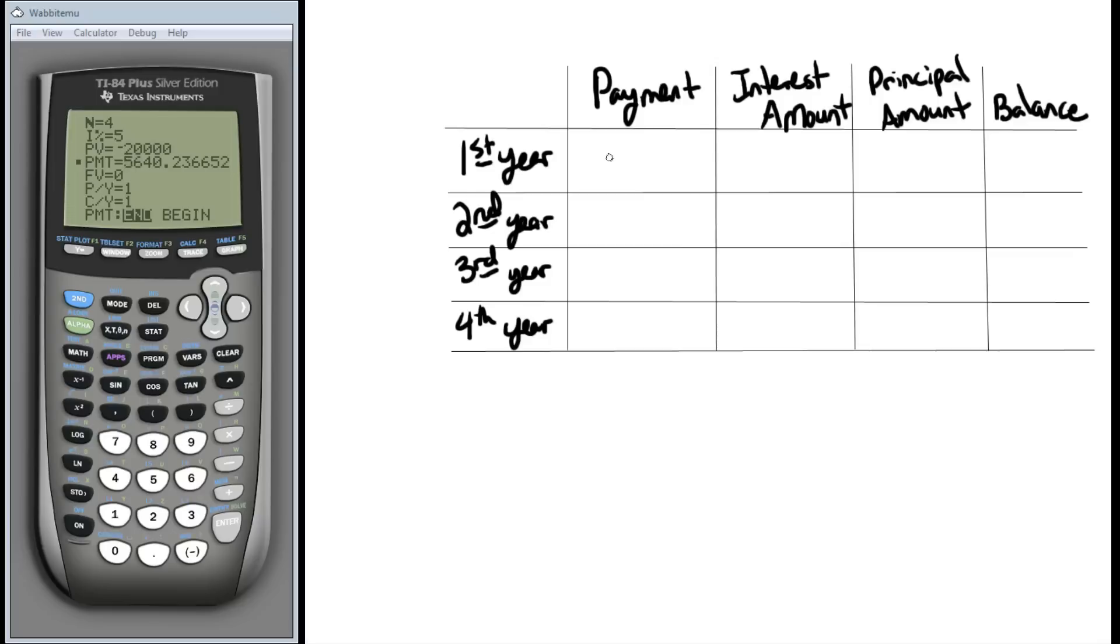So our payment. Now one thing about our solution here, this is the payment we're going to make every year. That payment's never going to change. However, how that payment breaks into its parts does change every year. We're going to start with this payment of $5,640.24. And I'm going to go ahead and put these in. These will be our payments each time as we go along. Every time we make a payment, this is how much we're going to write the check for.